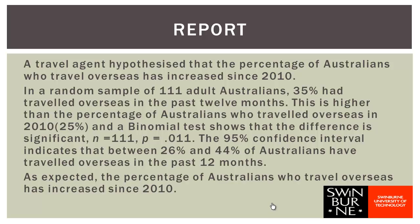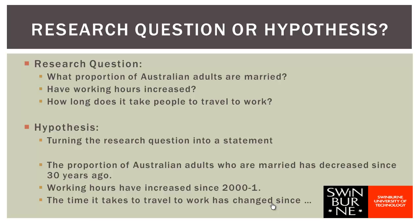As we've gone through this week's lecture, I've mentioned hypotheses and research questions — these are related but different. A research question, as the name implies, is a question: 'What proportion of Australian adults are married?' or 'Have working hours increased?' A hypothesis turns the research question into a statement — a prediction. For example: 'The proportion of Australian adults who are married has decreased in the last 30 years,' or 'Working hours have increased since 2000-2001.' Research questions are questions being posed; a hypothesis is a prediction.